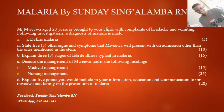Question A2 says: State five other signs and symptoms that Muaywa will present with on admission, other than the ones mentioned in the stem. The ones mentioned in the stem were headache and vomiting, meaning we are not supposed to include these in our signs and symptoms.